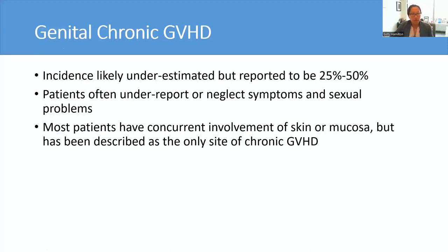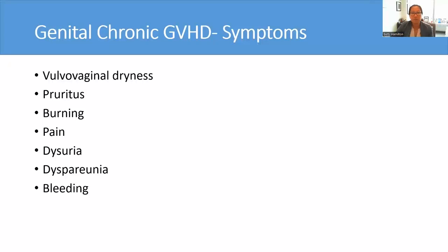Lastly, I'm going to briefly overview genital chronic GVHD. The incidence of genital chronic GVHD has been reported to be anywhere from 25 to 50%, depending on which study you look at. The true incidence is likely underestimated as patients tend to under-report or ignore symptoms and sexual problems — sometimes they're a little embarrassed to talk to their providers about their symptoms. Patients with genital GVHD complain of dryness, itching, burning, and can have pain with urination or intercourse, and sometimes with more severe cases, bleeding.